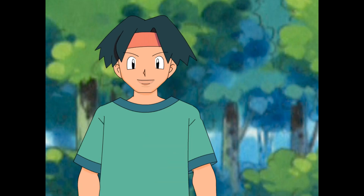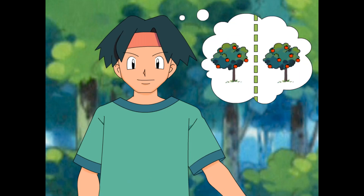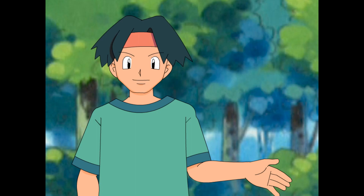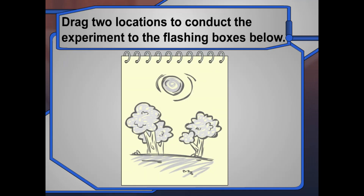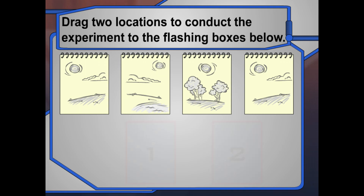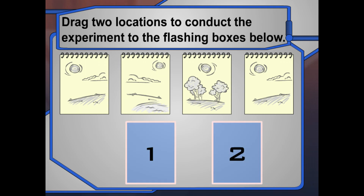Let's test it out — plan an experiment. We'll take two apple trees. We'll make it really cold around one tree and keep it warm around the other tree, and we'll make sure everything else is exactly the same. That way we'll know nothing else is influencing the results of our test. Now, where in Kanto can we do the experiment? Let's see if any of the locations will work — drag and drop them to the flashing rectangles.